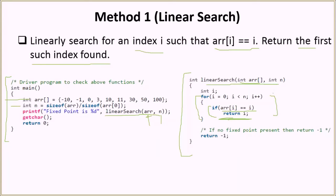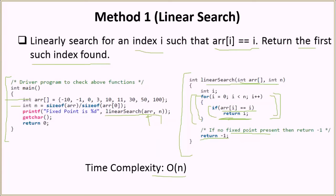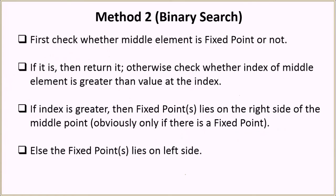If the loop completes without returning anything, we return minus one, indicating there is no fixed point in the array. The time complexity of this solution is O(n) because in the worst case we iterate over the whole array without finding a fixed point. The better method is to use binary search.